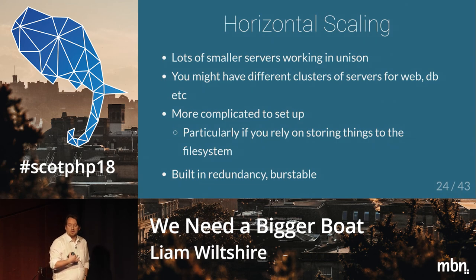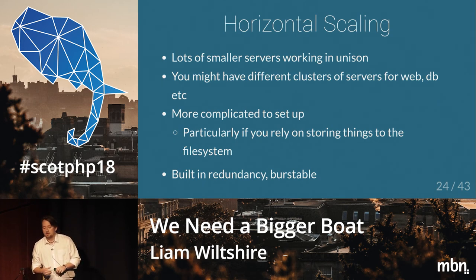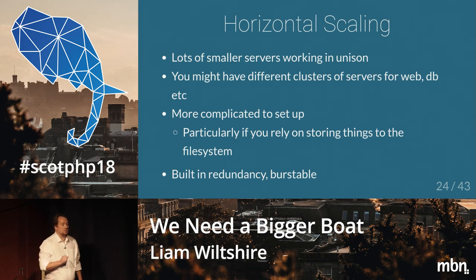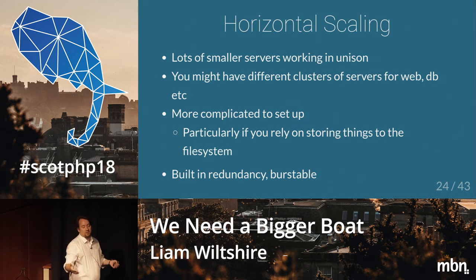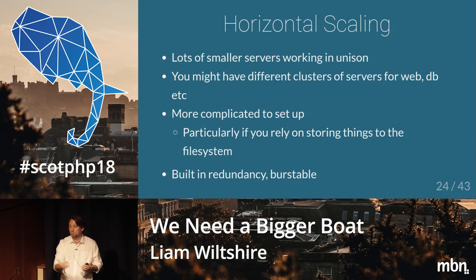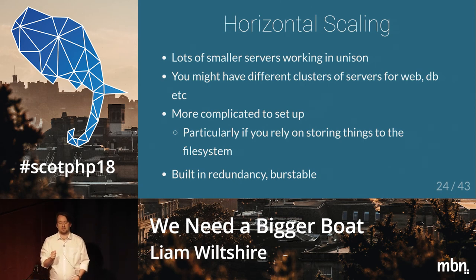The other sort of scaling we tend to talk about is horizontal scaling — lots of smaller, cheaper servers working in parallel with each other. You might have a cluster of servers for your web interface, and request one goes to one server, request two goes to the next, request three goes to the next, and so on. If you find you're starting to run out of resources, you just add another server in there and start redirecting requests. And when traffic dies down, you can remove the servers you don't need. This can be done on web nodes, Redis — we'll come on to databases in a minute because that's a bit of an interesting kettle of fish.